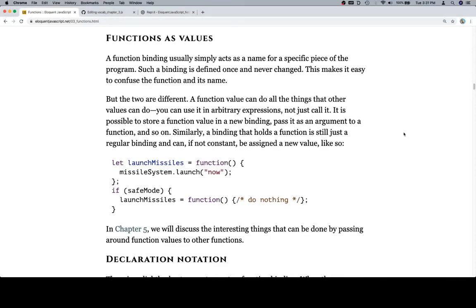Hey everybody, welcome back. Let's read about functions as values. A function binding usually simply acts as a name for a specific piece of the program. Such a binding is defined once and never changed. This makes it easy to confuse the function and its name.